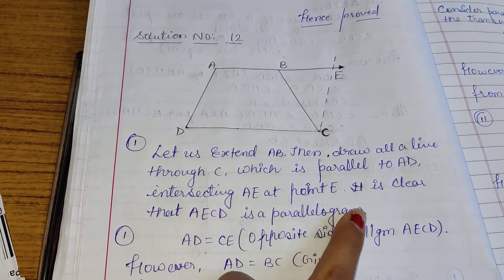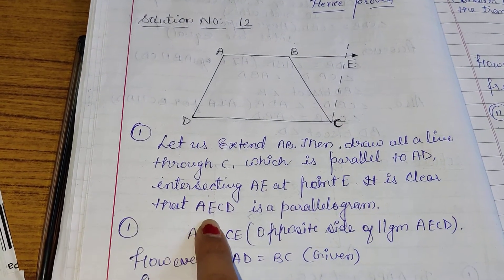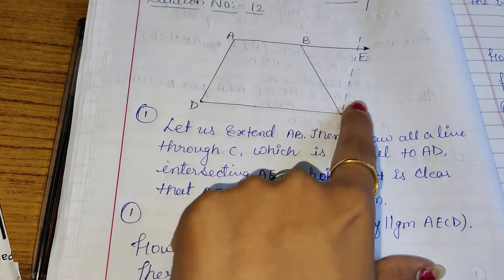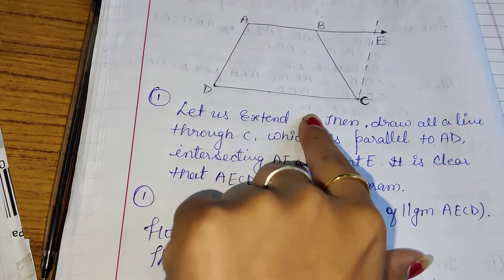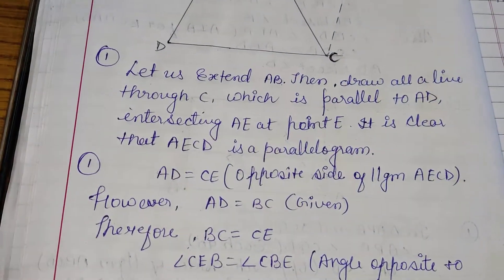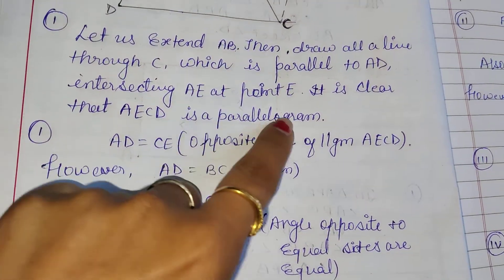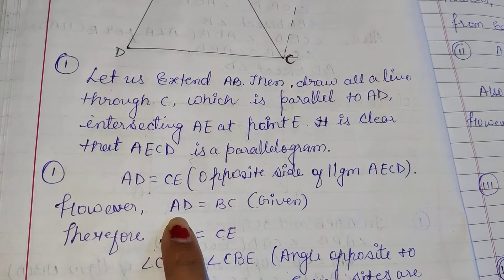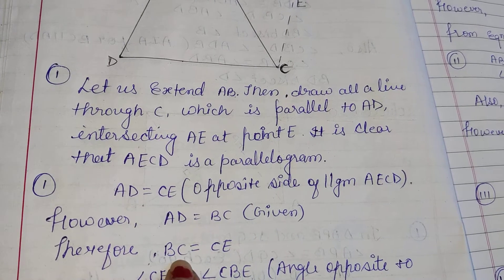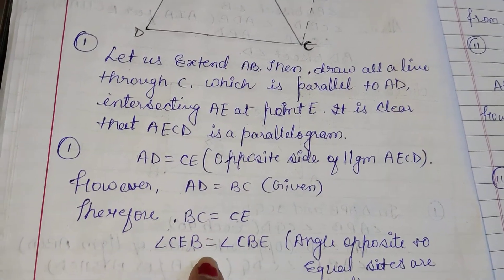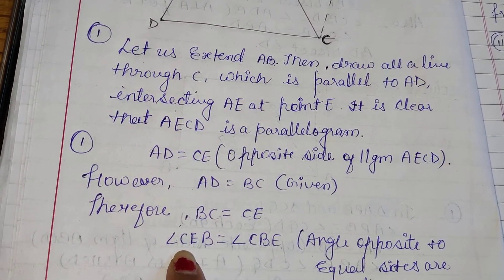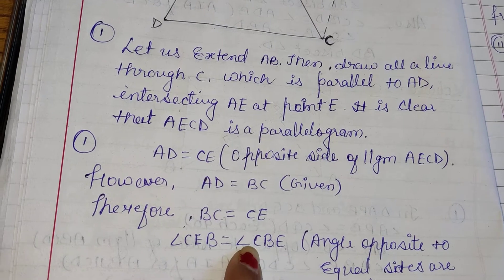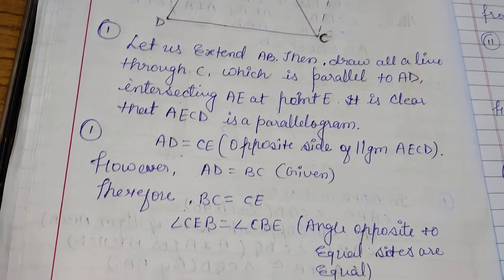It is clear that AECD is a parallelogram. In condition 1, we can write AD is equal to CE — opposite sides of parallelogram AECD. However, AD is equal to BC (given). Therefore CE is equal to BC, and angle CEB is equal to angle CBE — angles opposite to equal sides are equal.